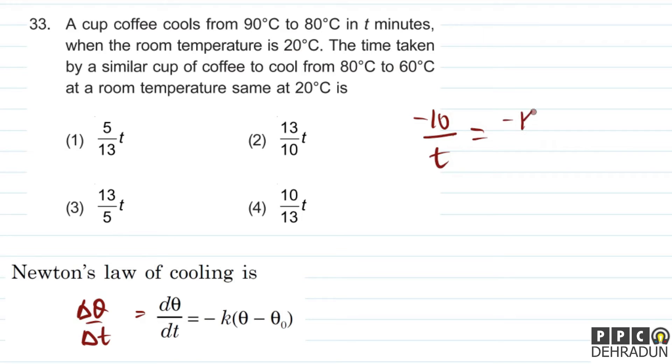It is equal to minus k times theta minus theta naught. Now what will we write here? For theta we can take the average. Since it went from 90 to 80, the average temperature will be 85. So we'll write 85 minus room temperature, which is 20 degrees Celsius. So one equation we have here.